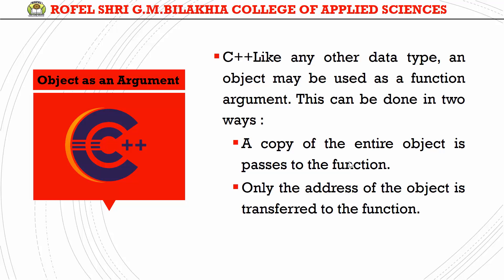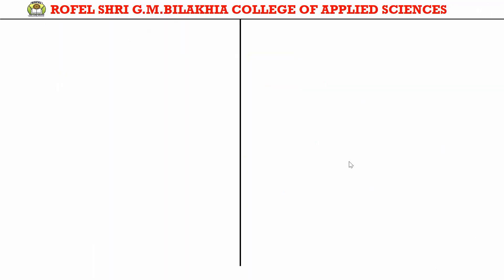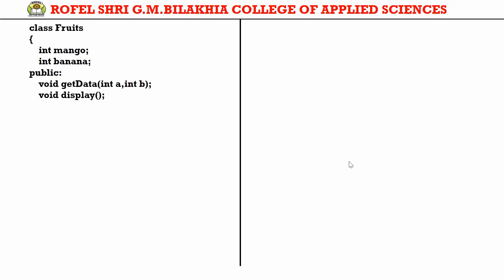Let us see one example of object as an argument. First, take a class called 'fruit' with two integer variables: mango and banana — representing the total number of mangoes and bananas. Now take a public member function: getData with two parameters, integer a and integer b, and a display function. getData will accept the values for total mango and banana, and display will show those values.